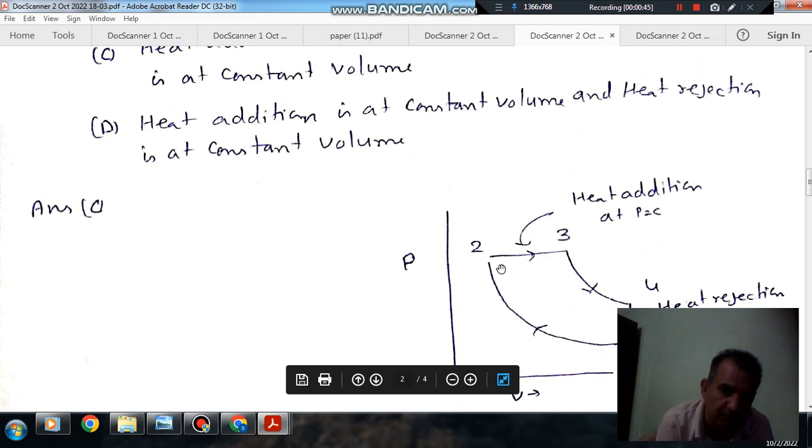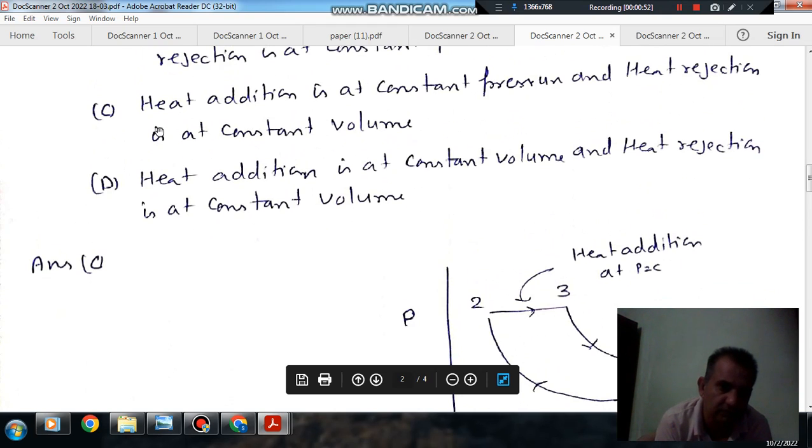Process 1-2 is isentropic compression. Process 2-3 is heat addition. Process 3-4 is expansion, and process 4-1 is heat rejection. So, option C: heat addition is at constant pressure and rejection is at constant volume.